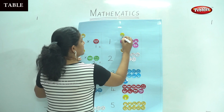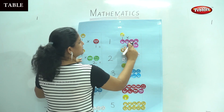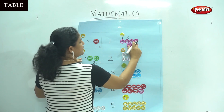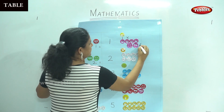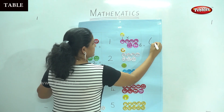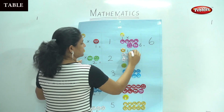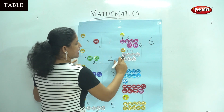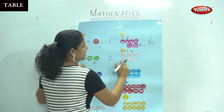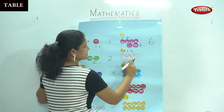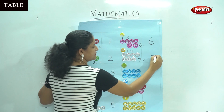Then we have 1 time, 1, 2, 3, 4, 5, 6 smiley faces — that gives us number 6. Next, 1 time, 1, 2, 3, 4, 5, 6, 7 — seven smiley faces which gives us number 7.